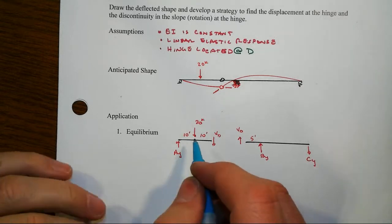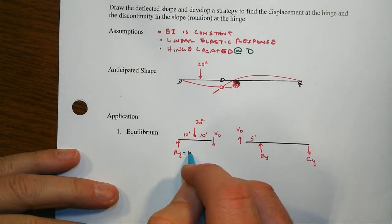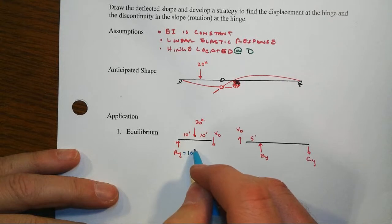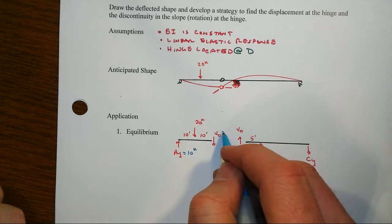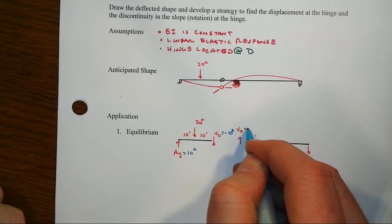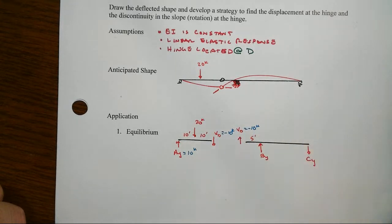And the moment is by definition then zero. And so given what we've got here in the symmetry, it's easy to see that AY is going to be equal to 10 kips acting up. And VD should be acting 10 kips up, but we've got it shown the other way so that becomes a minus.